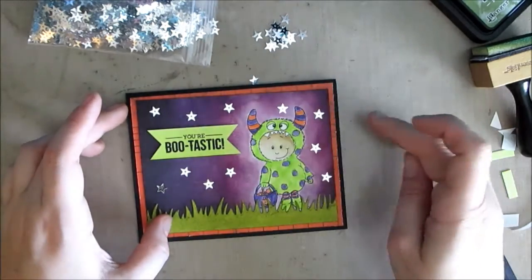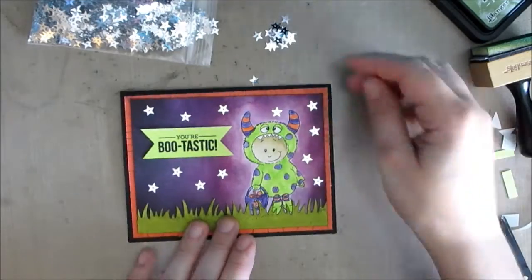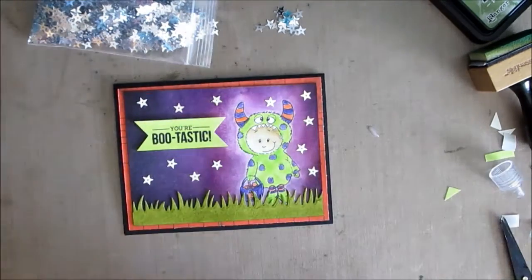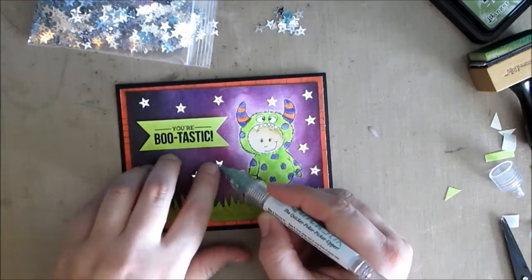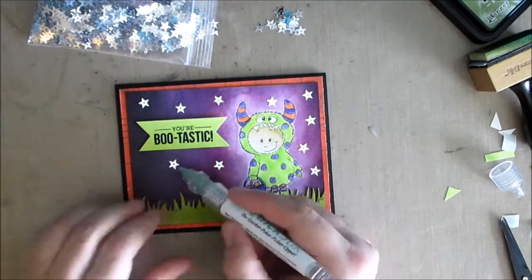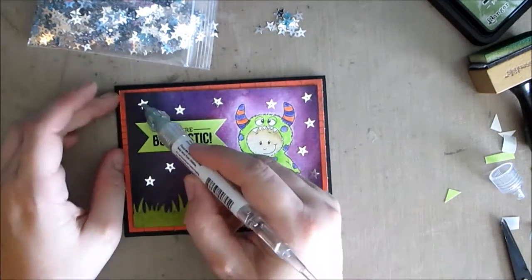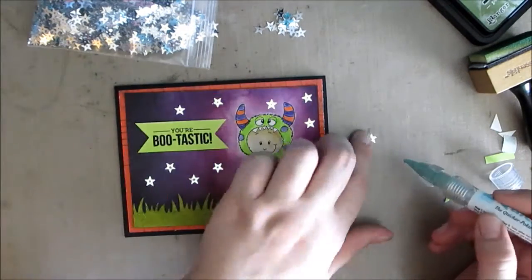I put on a black card base. Then I'm going to be just adding some stars for the night sky. These are just some simple star sequins that I picked up at a local craft store in a big old bag. I'm just going to be using the matte accents again and my quick sticks tool to pull them on.